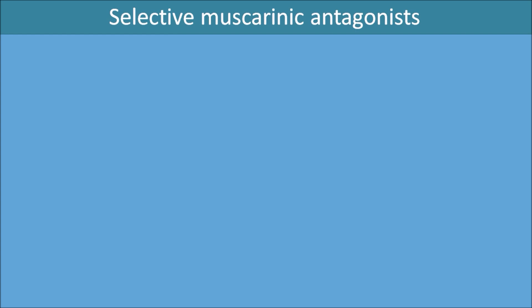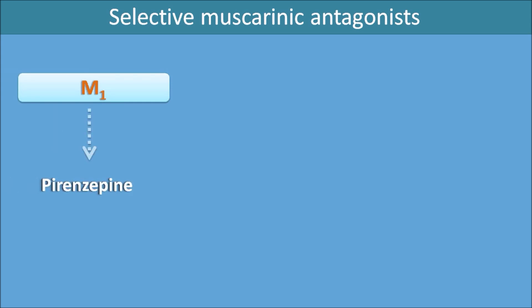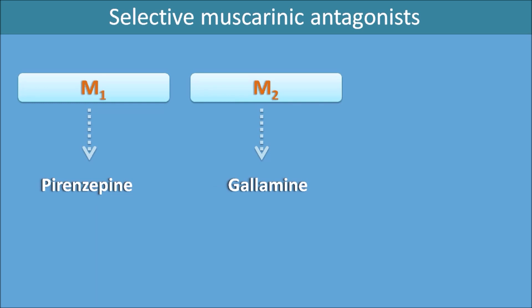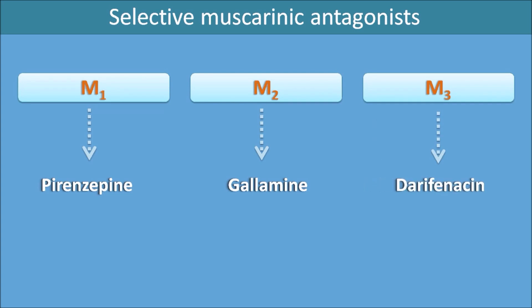The M1 blocker is pirenzepine, which is used as an anti-ulcer agent. The M2 blocker is gallamine — though gallamine is not a pure M2 antagonist, as it also has an additional action as a neuromuscular blocker. The M3 blocker is darifenacin, which is a bladder relaxant that selectively blocks M3 receptors. These are the selective muscarinic antagonists acting on M1, M2, and M3 receptors.